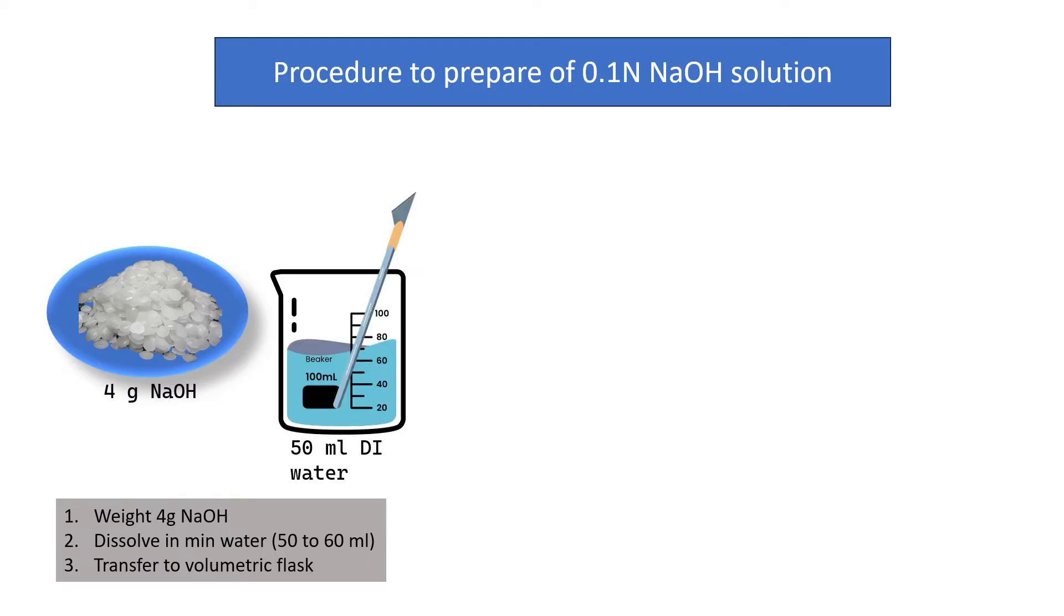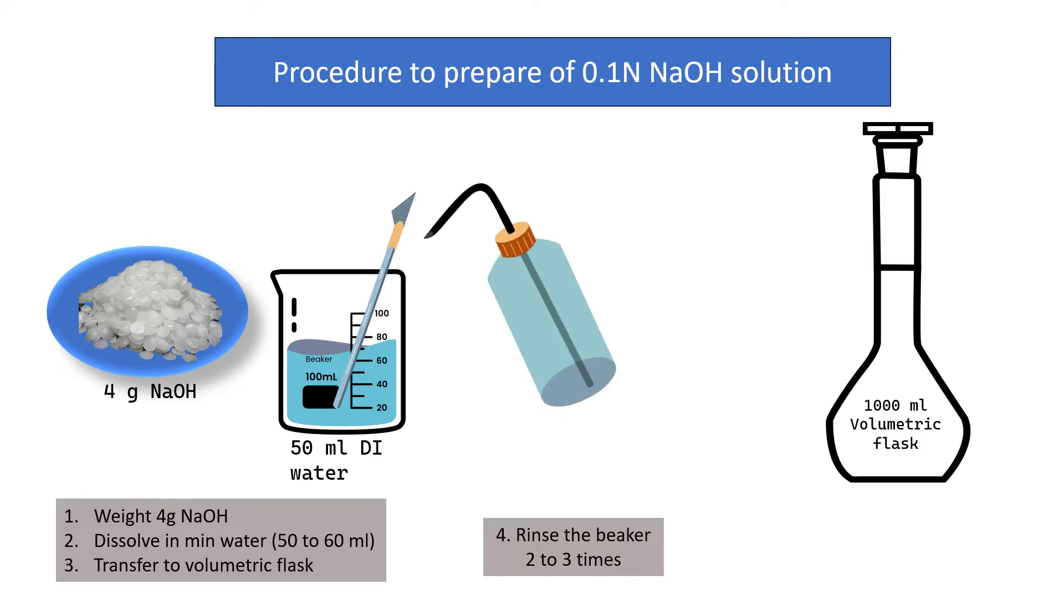Dissolve this NaOH in 50 to 60 ml of water with the help of a glass rod. Transfer this NaOH solution to a 1000 ml volumetric flask. Rinse the beaker 2-3 times with small amounts of water and transfer these washings to the same 1000 ml volumetric flask. Finally make up to the mark with water. This is your 0.1 normal NaOH solution.